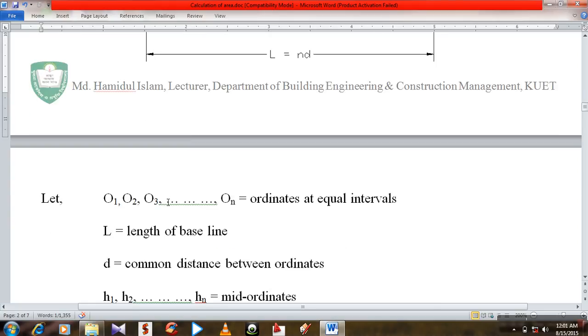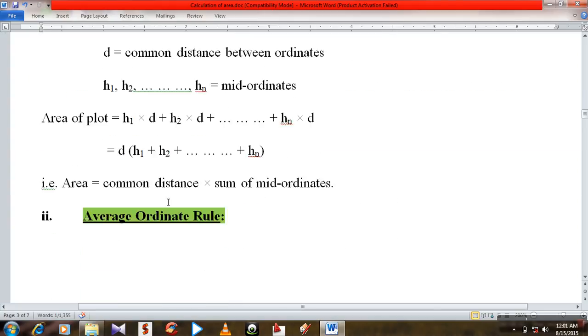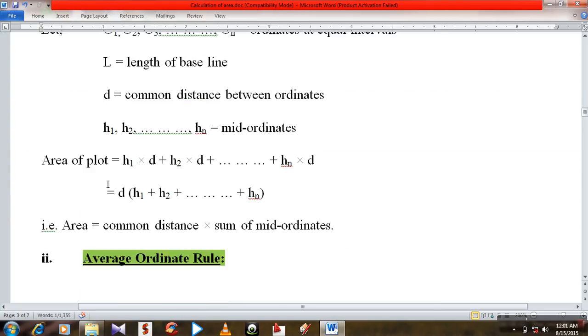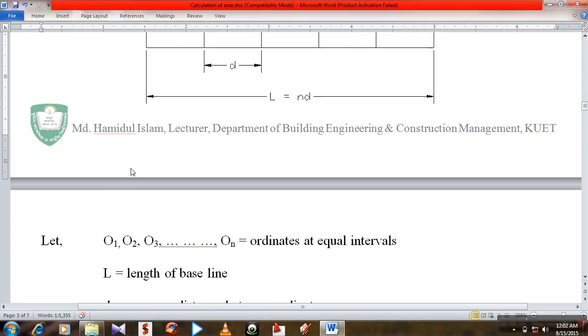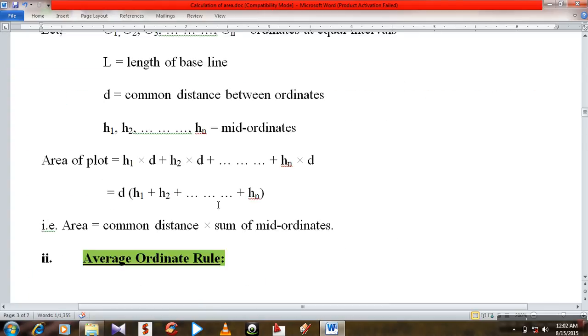A1 mid-ordinate area plot, A1 into distance. A1 into D. So in general rule, D into A1 plus A2 up to A7. Common distance. That is, area equal to common distance into sum of mid-ordinates.